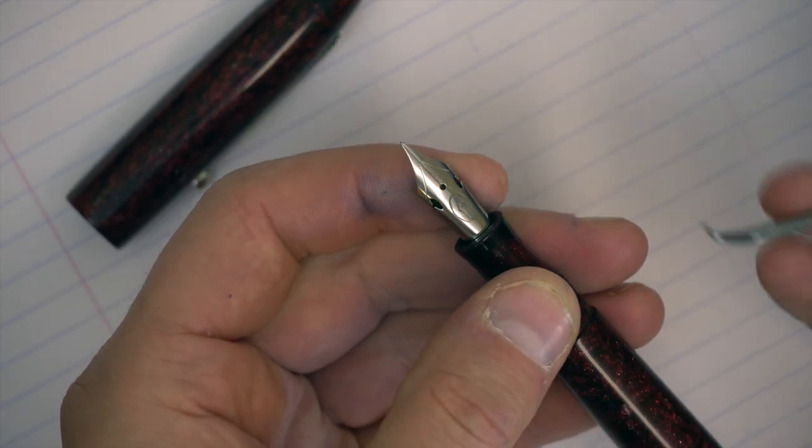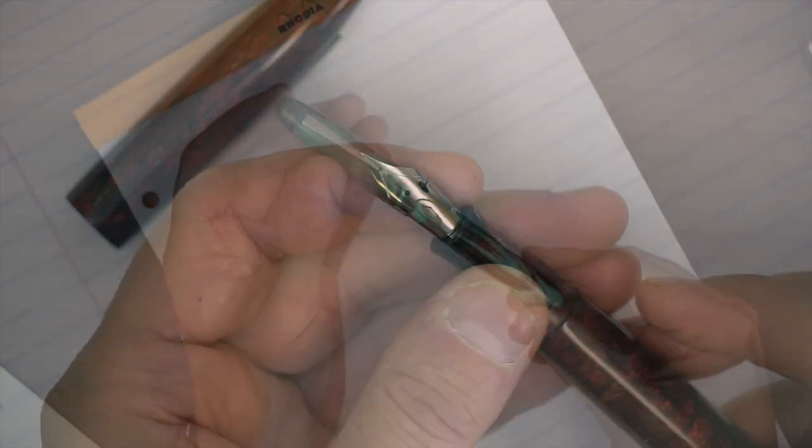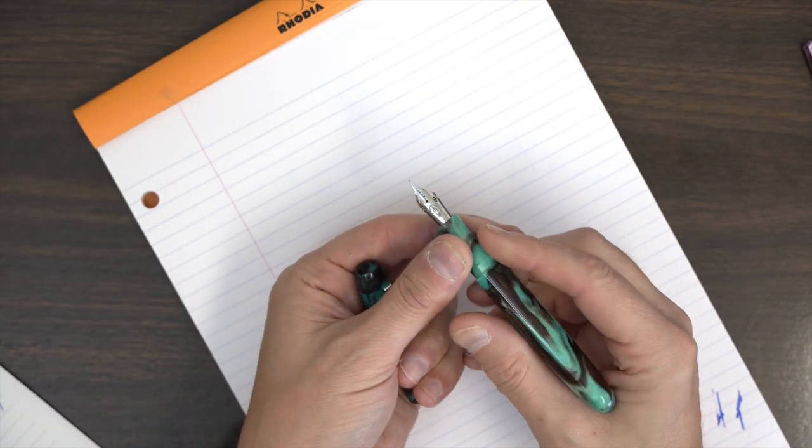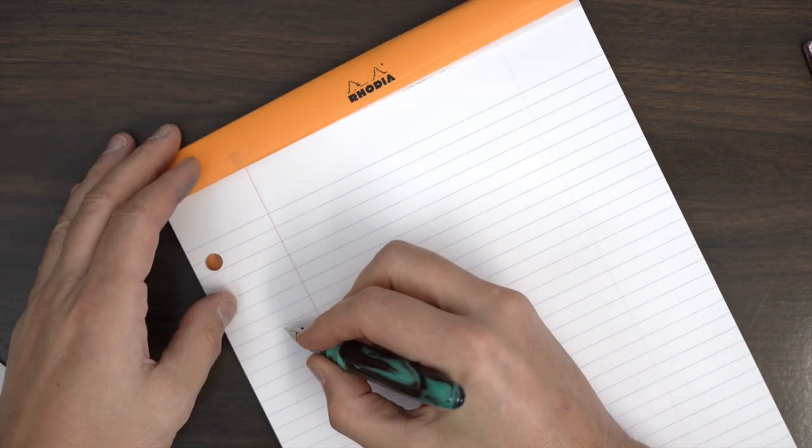Now let me show you some writing samples. This is a Collier with one of the flex nibs mounted. This is an extra fine and let's see what this does.